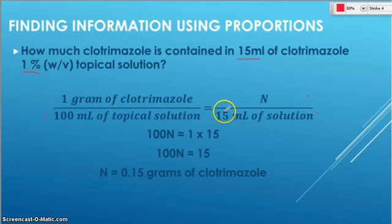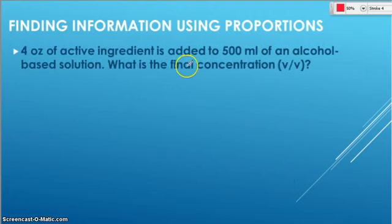1 times 15. 100 times N is our cross multiplication. We're dividing both sides by 100. And when we divide 15 by 100, we get 0.15. So my final answer on this one is 0.15 grams of that active ingredient, clotrimazole.